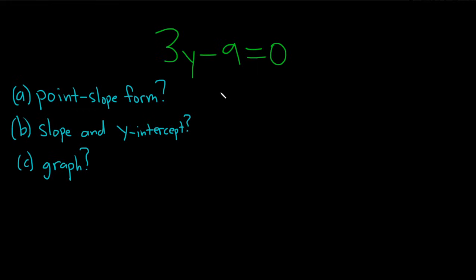Hello, in this problem we have the equation of a line, and we're asked various questions. Part A wants the point-slope form, which is basically y equals mx plus b, so write this in this form.